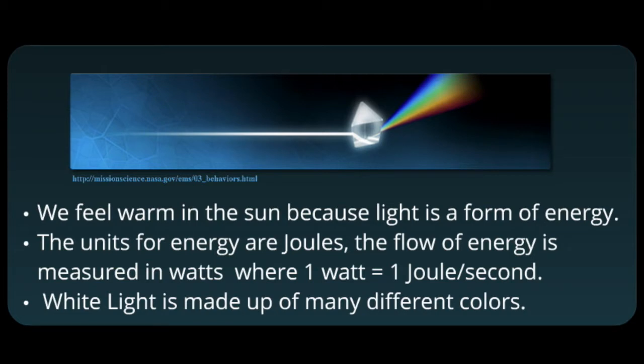Isaac Newton studied light and found that white light was made up of all the different colors, and he did this by shining white light on a prism. But many people thought that the colors were part of the prism. So he took a second prism and put it just in the red part of the spectrum, and only red came out of that prism, showing that light itself is made up of many different colors.